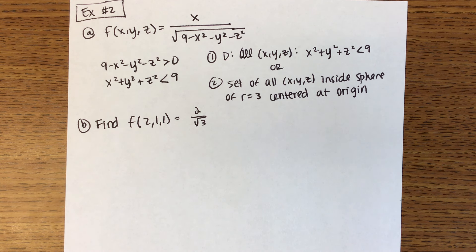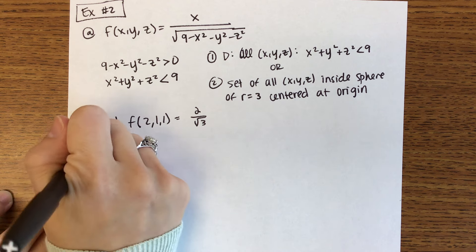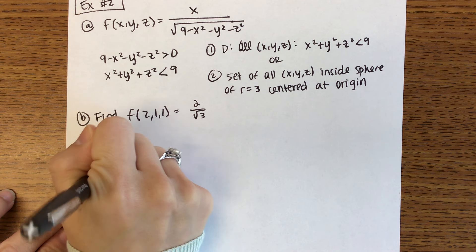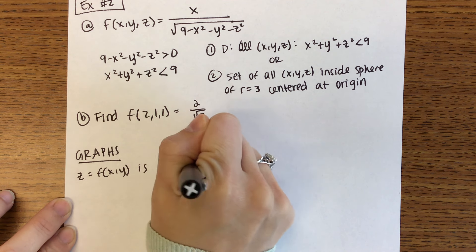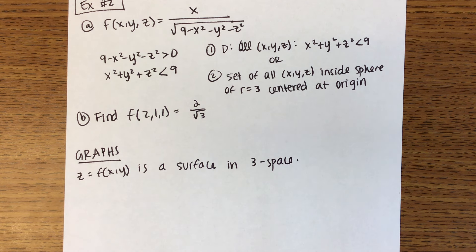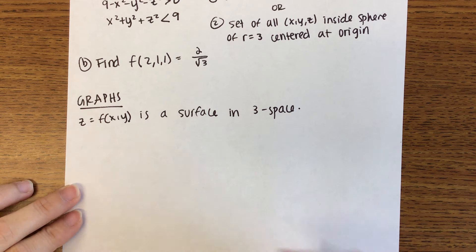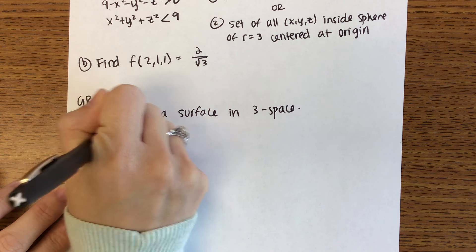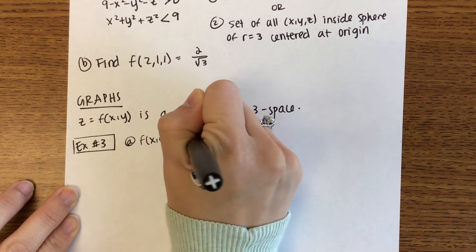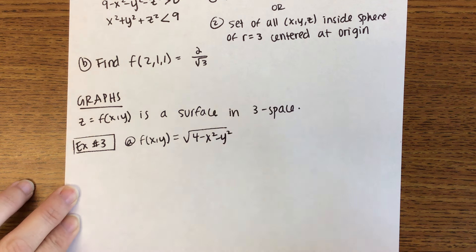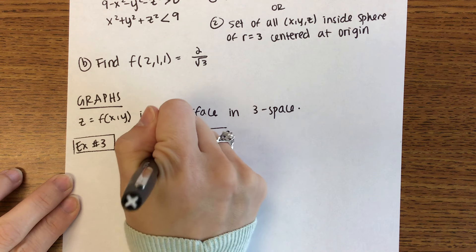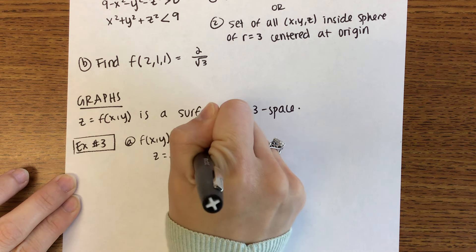Any questions on domain before we move on to graphing? Let's say that z is our function of two variables, a function of x and y — that is going to represent a surface in 3-space. For this next example we're going to do two different graphs. First one: f of x, y equals the square root of 4 minus x squared minus y squared.